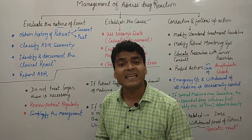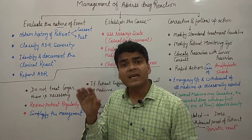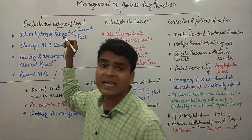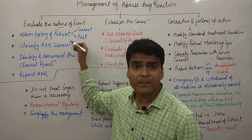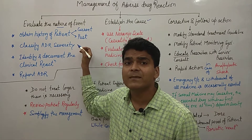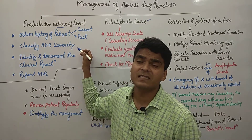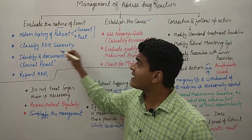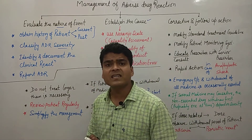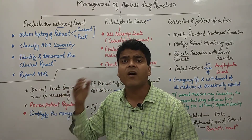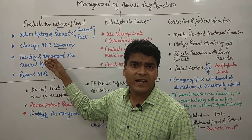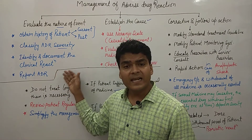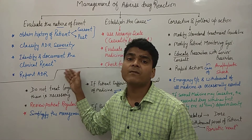In step one, we evaluate the nature of the adverse drug reaction. Doctors identify the severity of the adverse drug reaction. They obtain the patient's history — both current and past treatment and disease history. Then they classify the ADR severity as mild, moderate, or lethal, document the clinical reaction, and report the ADR to the hospital as well as to the national pharmacovigilance center.